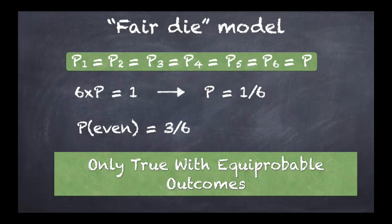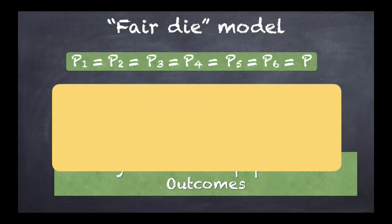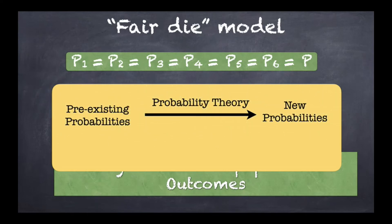This underlines a much bigger problem with probability theory in mathematics. Essentially, probability theory enables us to find new probabilities from pre-existing probabilities. It is not able to create probabilities ab nihilo — from scratch or from a vacuum. In sum, the mathematical theory of probability does not permit a free lunch: you can't create probabilities from nothing. The theory only enables us to transform some probabilities into other probabilities.